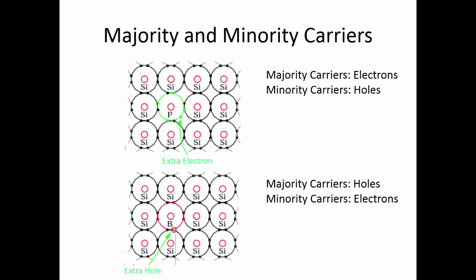To wrap up, we have two types of extrinsic semiconductors: the n-type semiconductor, where an extra electron is added, and the p-type semiconductor, where an extra hole is added when these impurities are added to the semiconductor. There are two important terms related to these concepts. In the n-type extrinsic semiconductor, there are a lot of extra electrons, so the majority carriers are these extra electrons. Because of the thermal process, there will still be a small number of holes created from thermal energy, but there are so many fewer holes than electrons that we call the holes the minority carrier.